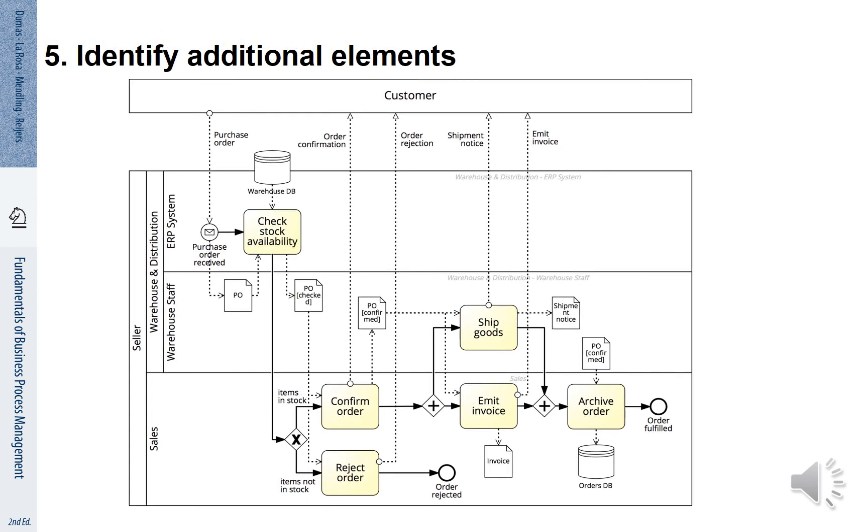Finally we need to identify additional elements that are important to represent for our process. You see here that information objects and information systems are represented. There is the purchase order that is processed. You see the PO with different status information of checked, confirmed and so forth. There is also the shipment notice and the invoice. There are two databases being involved. The warehouse database and the orders database.